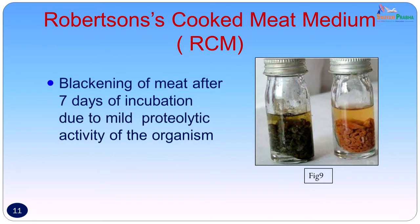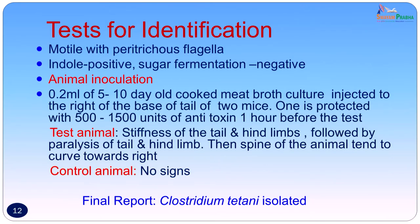The initial pus was also put into Robertson's cooked meat medium. There was blackening of meat after prolonged incubation, usually more than 7 days, due to the mild proteolytic activity of the organism — in contrast to sacrolytic organisms like Clostridium perfringens which show reddening. Tests for identification used were motility — the organism had a stately motility suggesting peritrichous flagella — indole was positive, and sugar fermentation was negative.